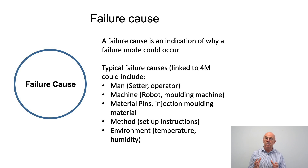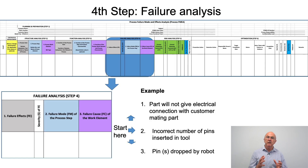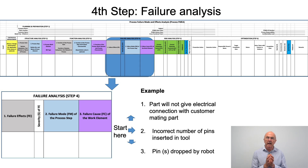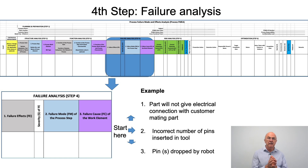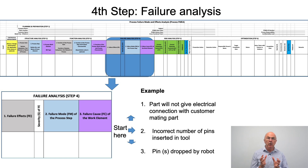A potential cause could also come from fluctuations in the environment — maybe temperature or humidity is very important in a particular process. So as we've done in the previous steps, what we're looking at here is how to fill in a template to capture the information we've collected.